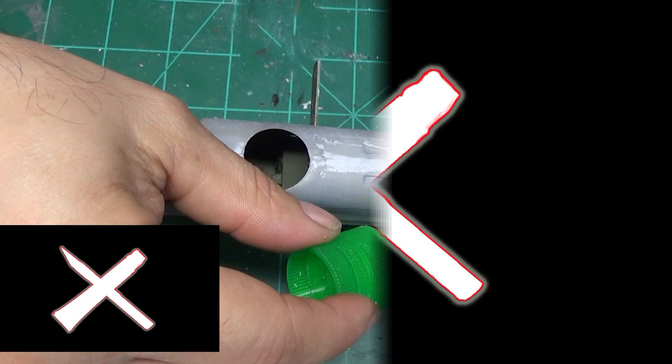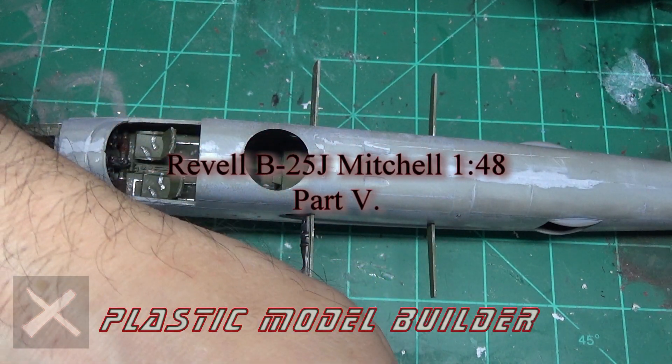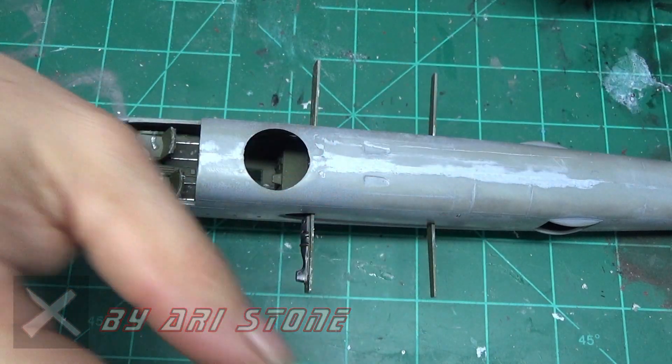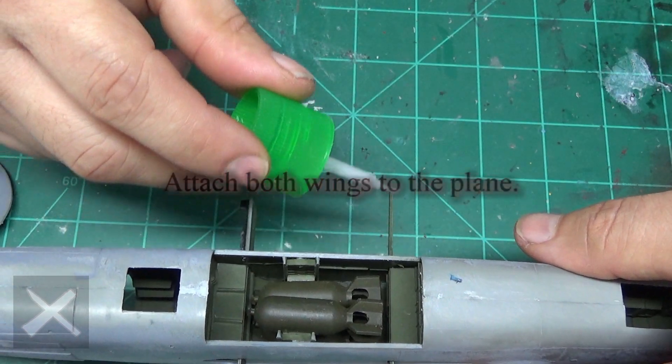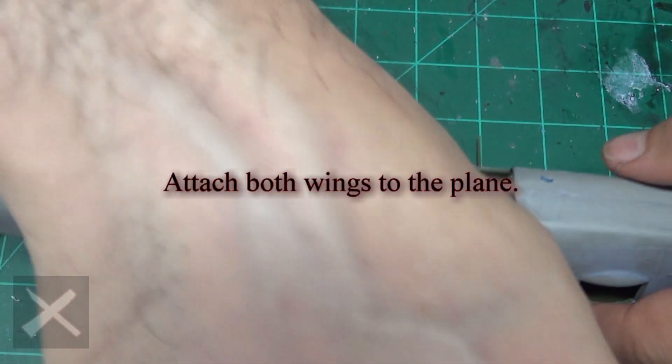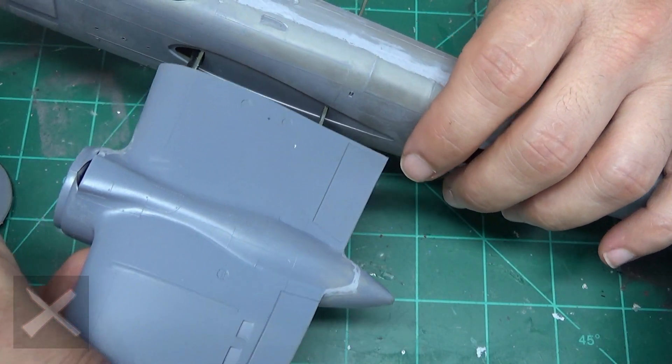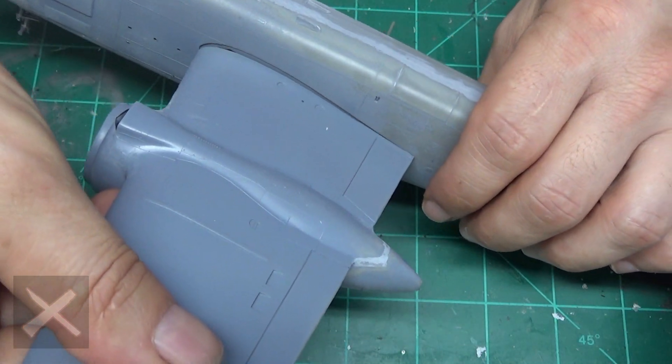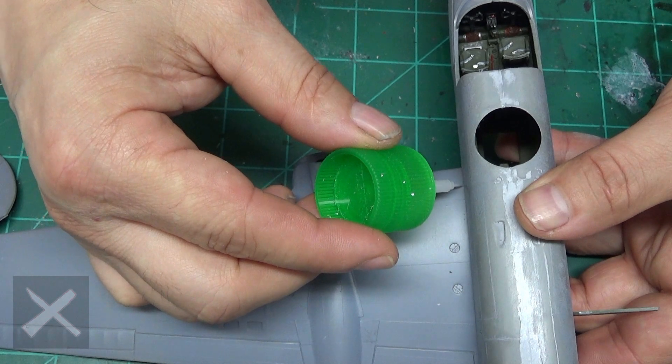Hello, plastic model builders. Welcome back. This is part five of the Revell B-25J Mitchell in 1/48th scale. If you didn't see the last episode, I suggest you go back and watch it so you can get caught up and see where we are.